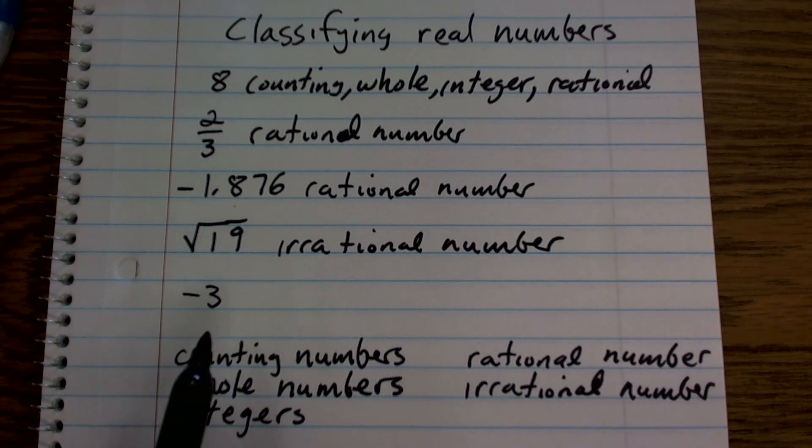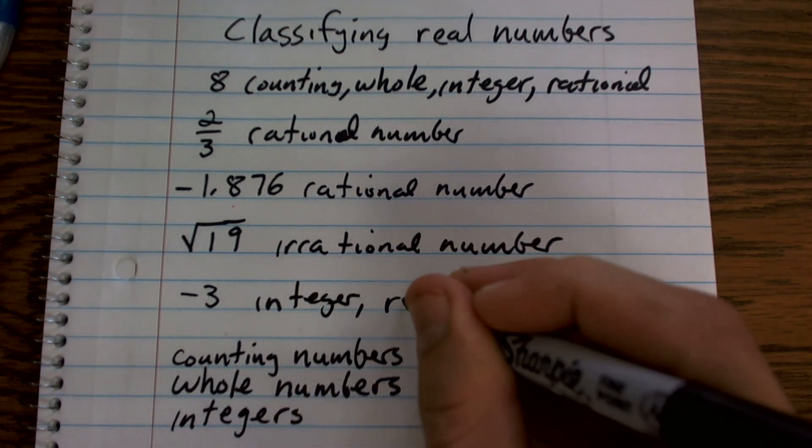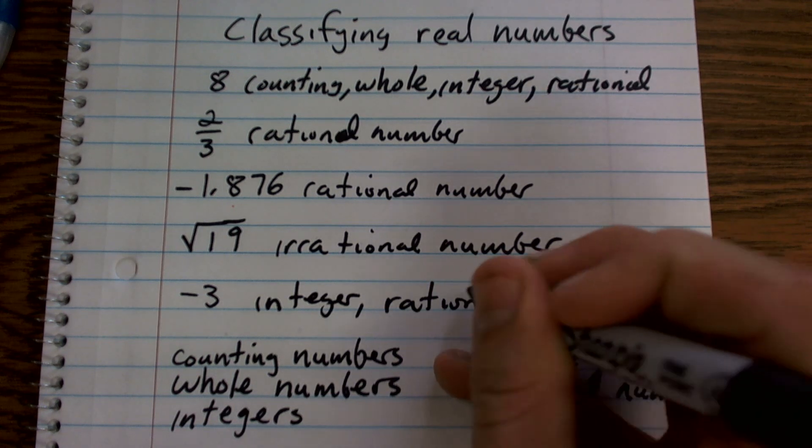And lastly, we have the number negative 3. So negative 3 is not a counting number, it's not a whole number, but it is an integer and a rational number.